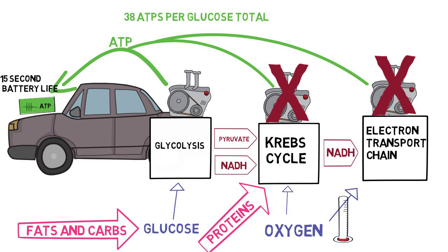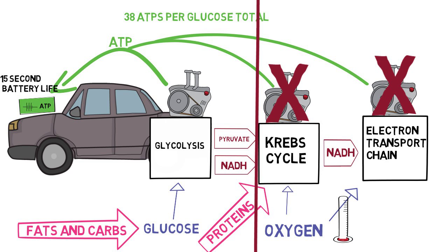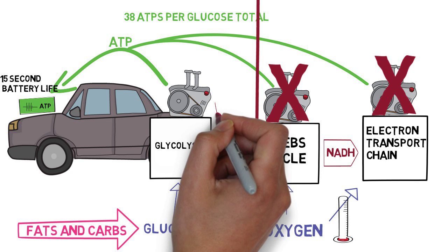Remember the first process, glycolysis? Well, if you remember, it didn't require oxygen, so it keeps chugging along for a little while. But it also only yields two ATPs.